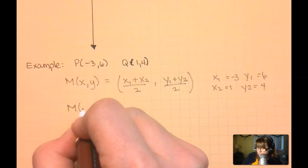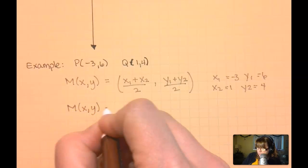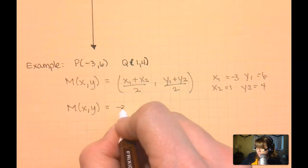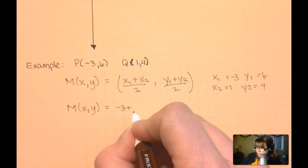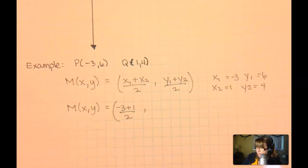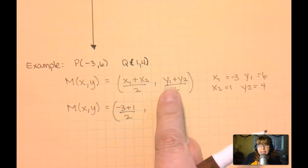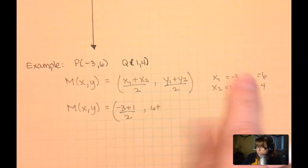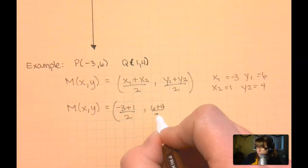So my midpoint at x, y will be x1 is negative 3 plus x2 is 1, all divided by 2. Y1 is 6, plus y2 is 4, all divided by 2.